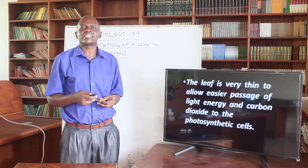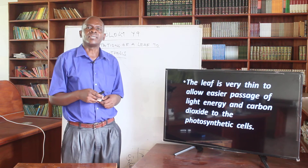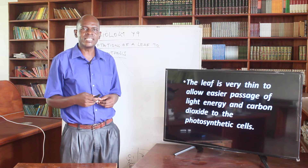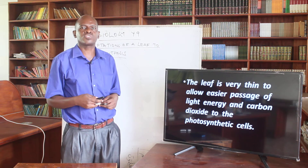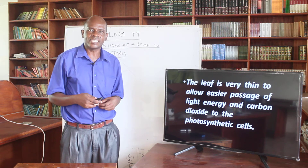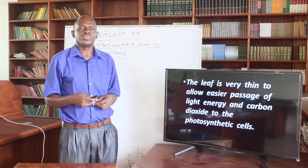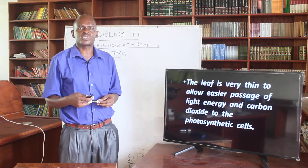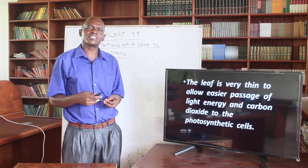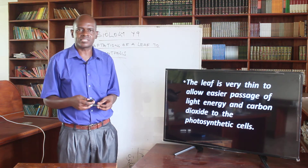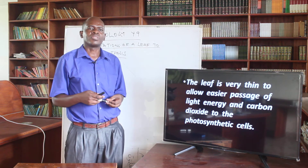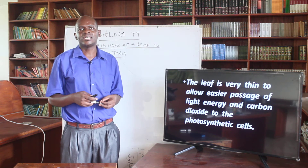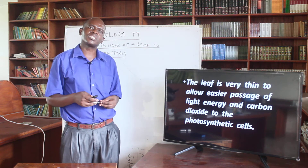Now, remember that this light energy, as discussed in the process of photosynthesis earlier, is very key when it comes to photolysis of water — the splitting down of water molecules to release the hydrogen atoms which are used in the dark reaction in photosynthesis. So, the light energy has to access the photosynthetic cells. When I talk about photosynthetic cells, I am referring to the palisade cells. And therefore, the leaf should have a thin surface so that this light energy can penetrate quite easily to reach the palisade cells.